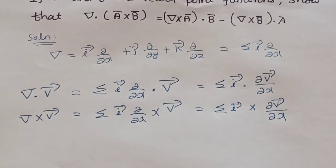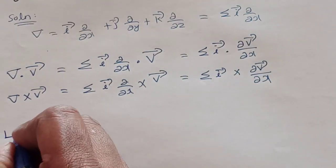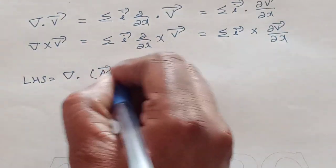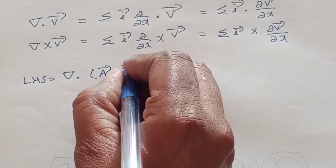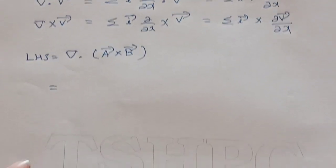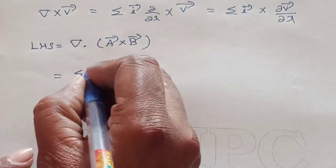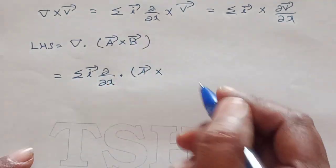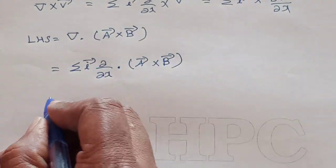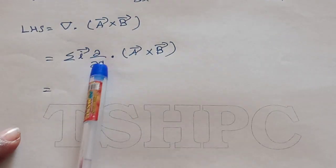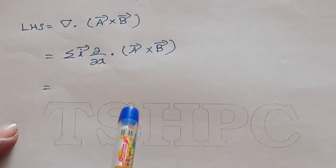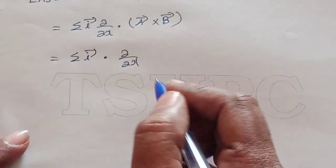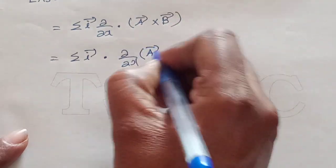Now we consider the left-hand side. LHS equals del·(a×b). Since del is a vector, we use sigma notation: sigma of i vector times ∂/∂x dot (a×b). This gives sigma of i vector dot ∂/∂x of (a×b).